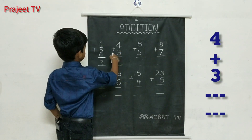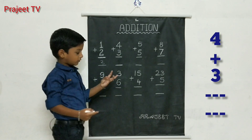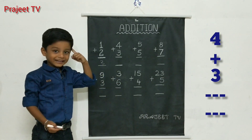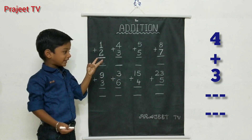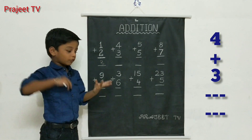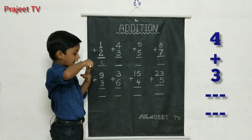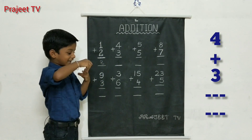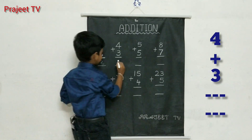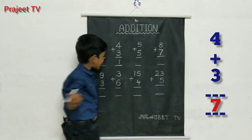Four plus three. Four in the mind, three in the fingers. Four after five, six, seven. Answer: seven.